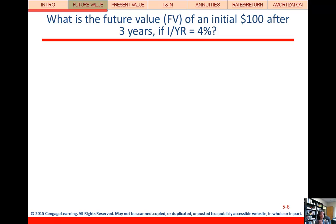What is the future value, we'll abbreviate that as FV, of an initial $100 lump sum? So I've got $100 today, and I want to know what it's going to be worth three years from now if I'm earning 4% per year.